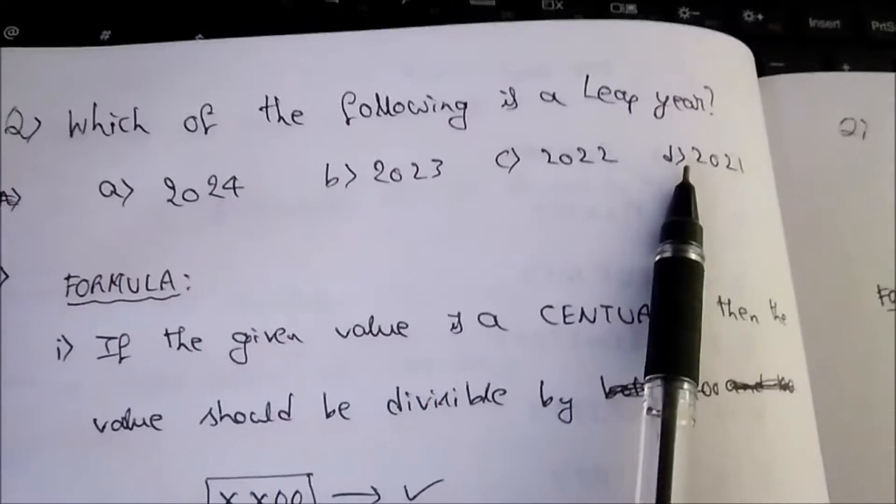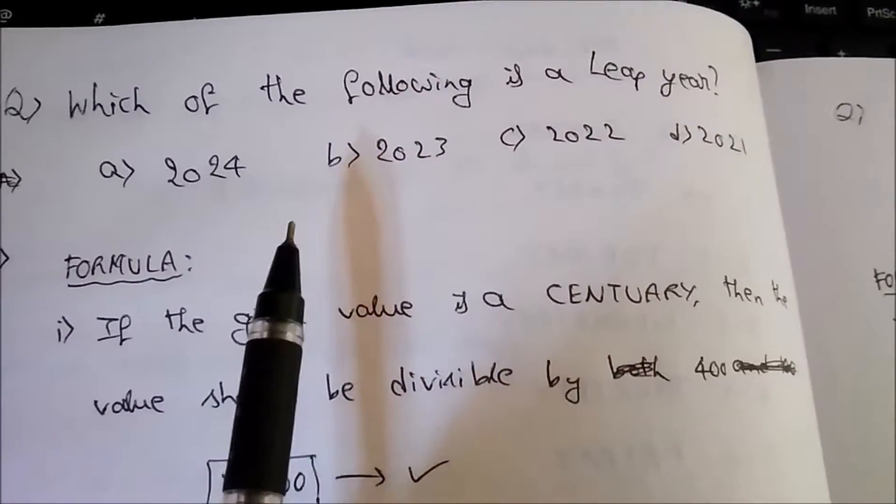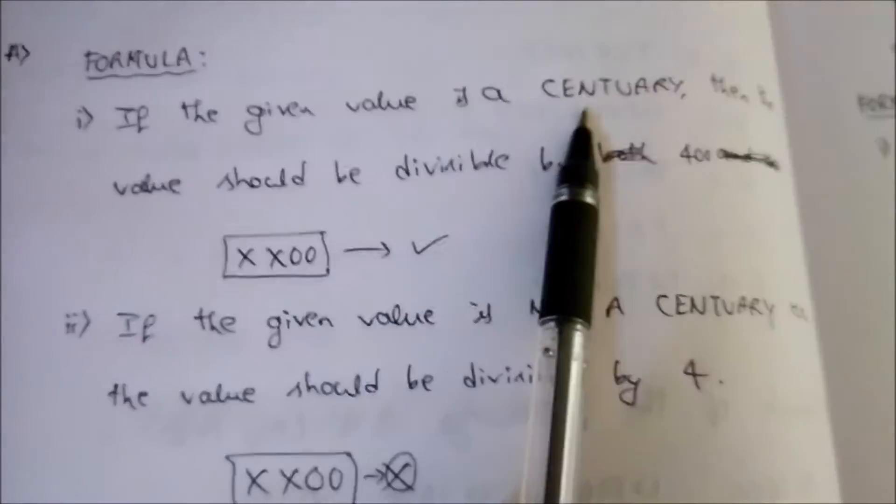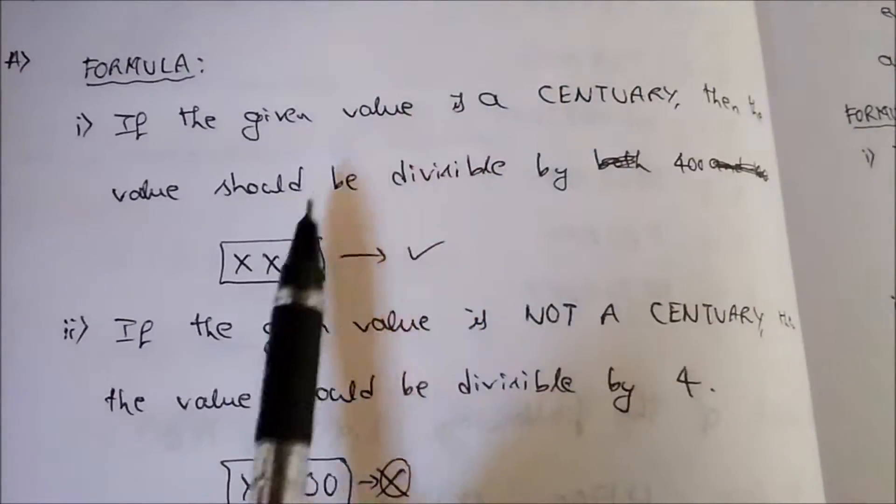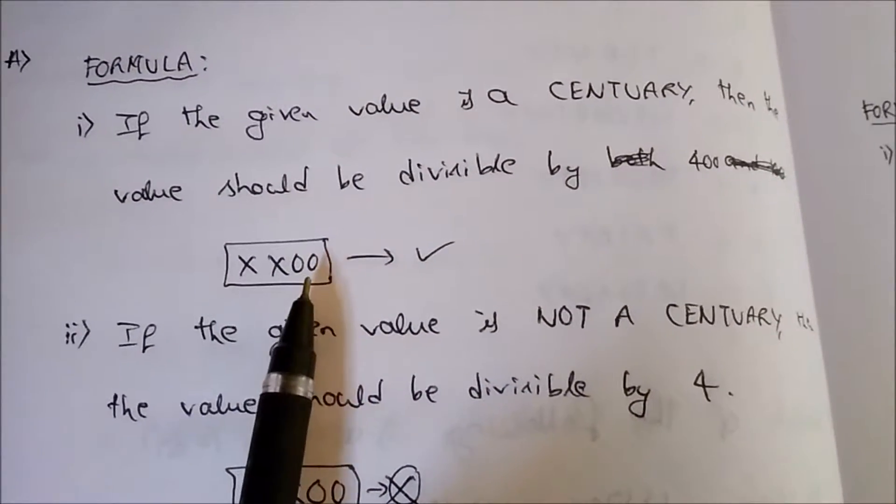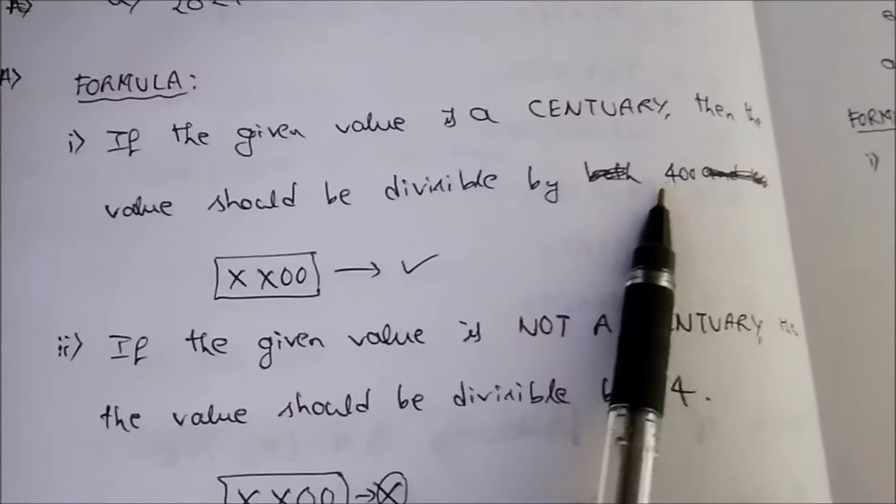To find a leap year we need to execute a formula. Let me look into the formula. If the given value is a century, then the value should be divisible by 400. That means if the last two digits of the given value are zeros, then it should be divisible by 400.